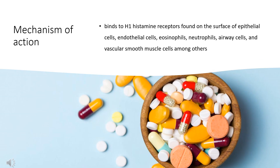Mechanism of Action: Like other H1 blockers, desloratadine competes with free histamine for binding at H1 receptors in the GI tract, uterus, large blood vessels, and bronchial smooth muscle. This blocks the action of endogenous histamine, which subsequently leads to temporary relief of negative symptoms — for example, nasal congestion and watery eyes — brought on by histamine.